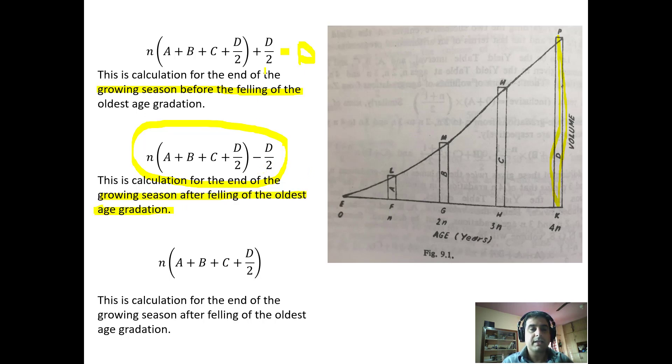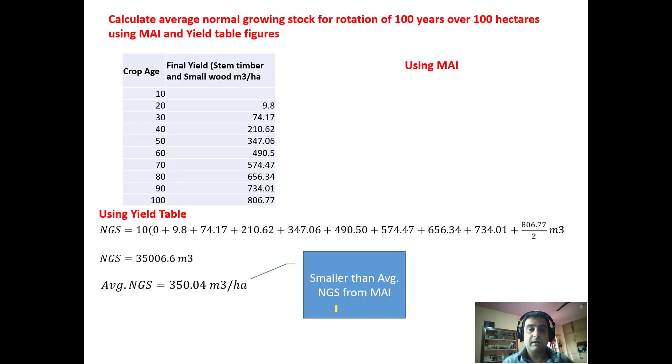It becomes from +D/2, and we subtract it by D, it becomes -D/2. This is the term averaging both +D/2 and -D/2. This is the growing stock at the end of the growing season after felling of the oldest gradation. So this is how we calculate growing stock using yield table method.